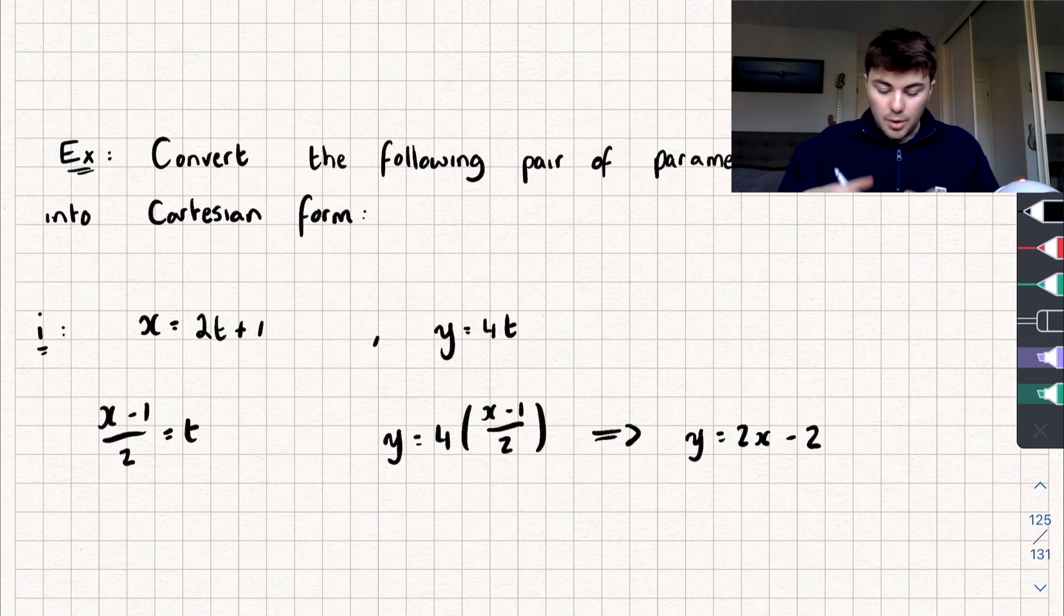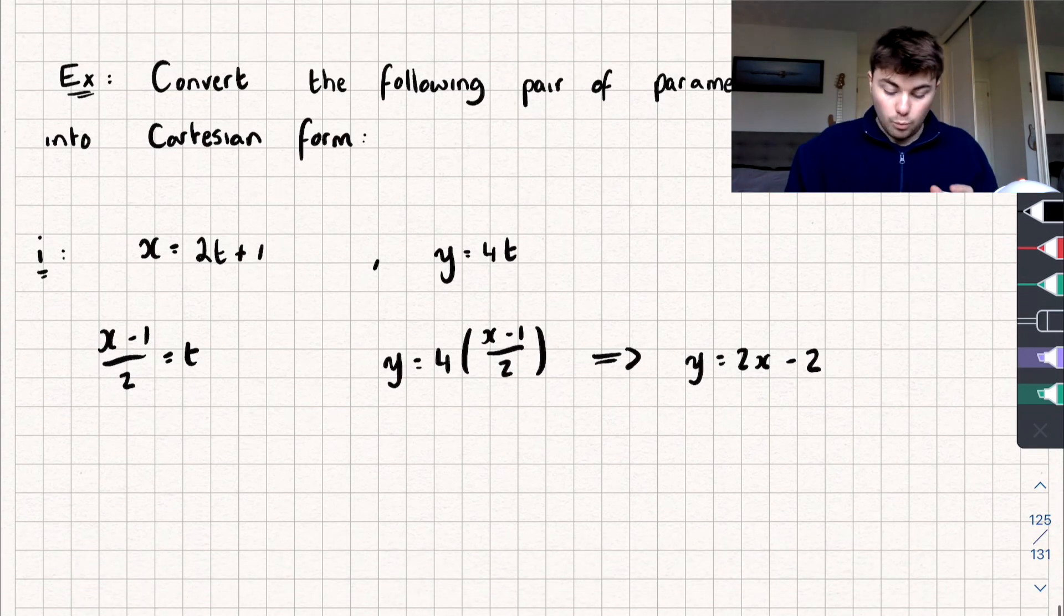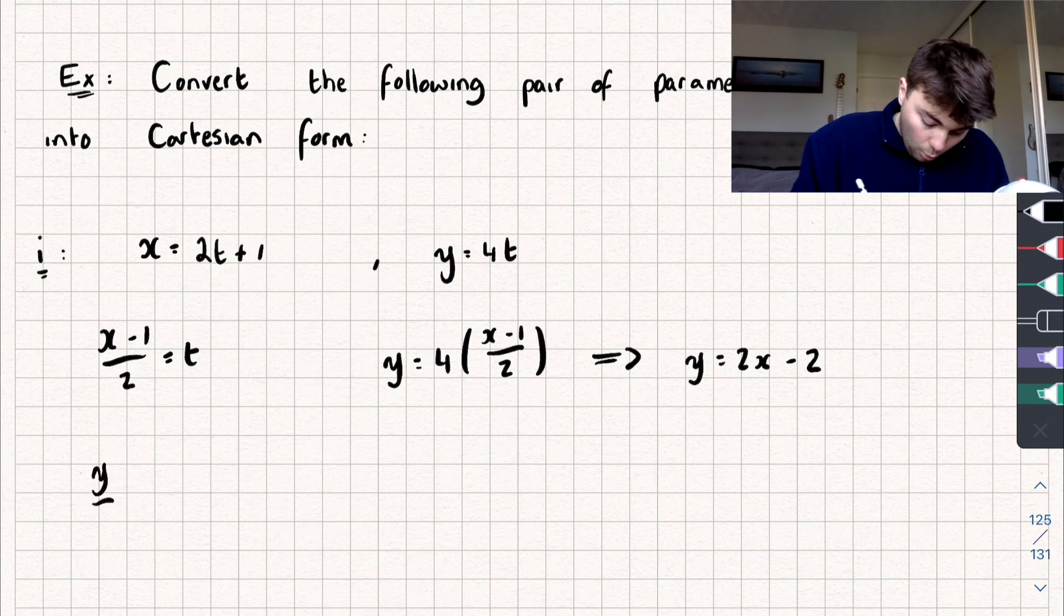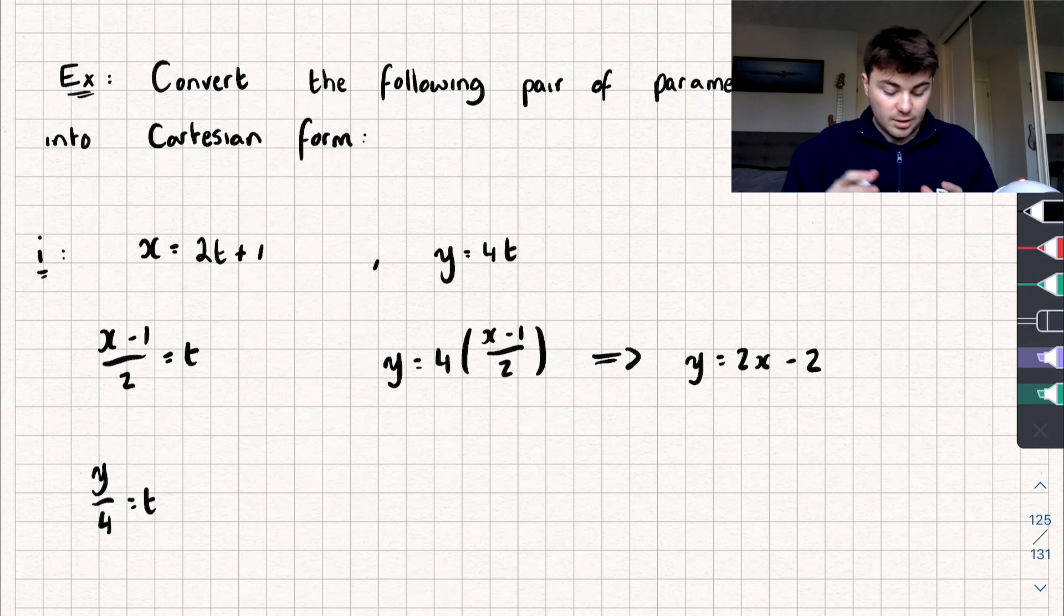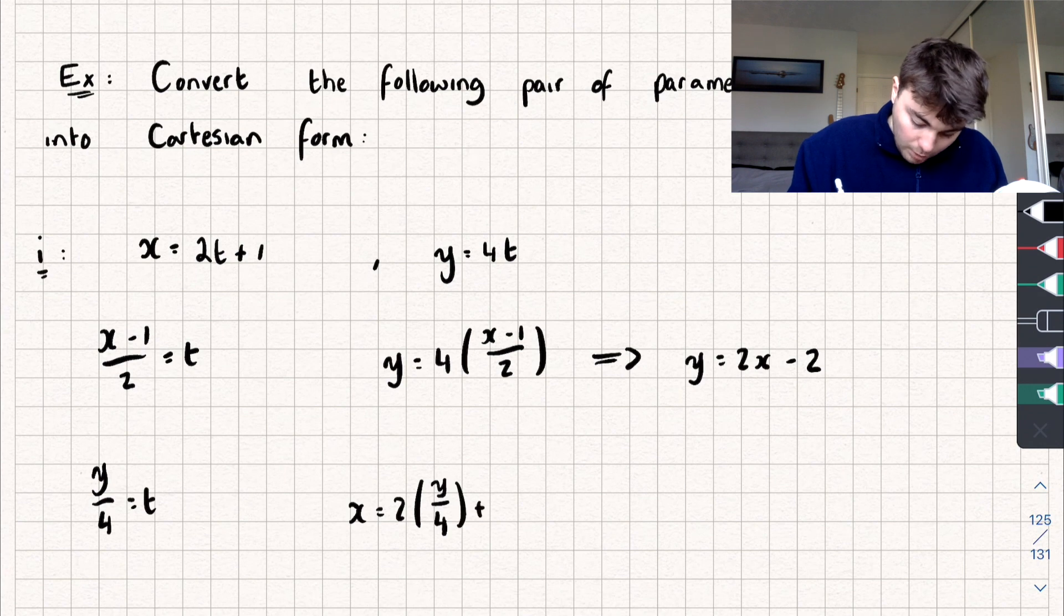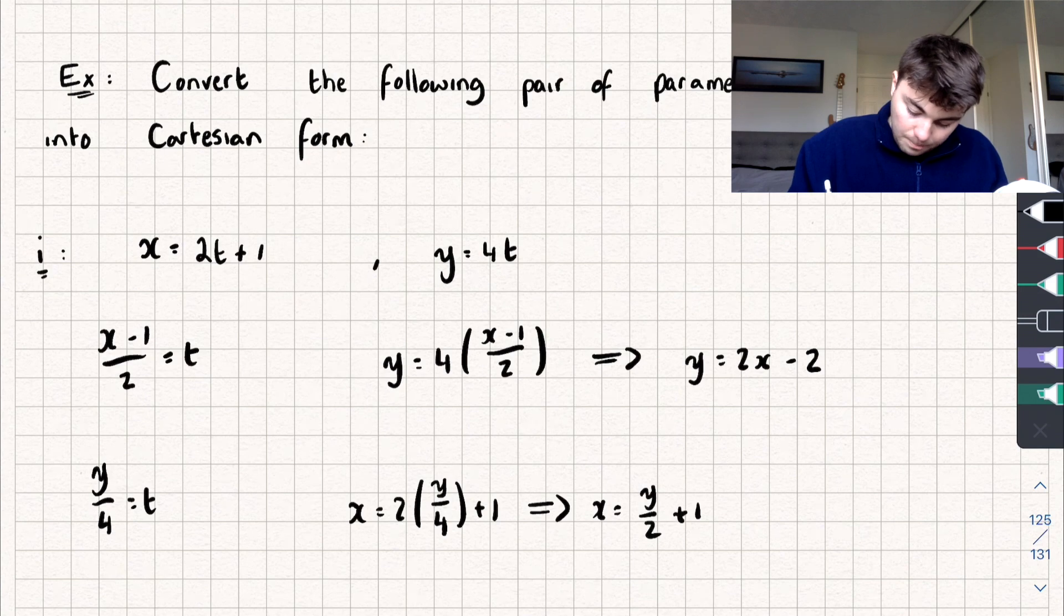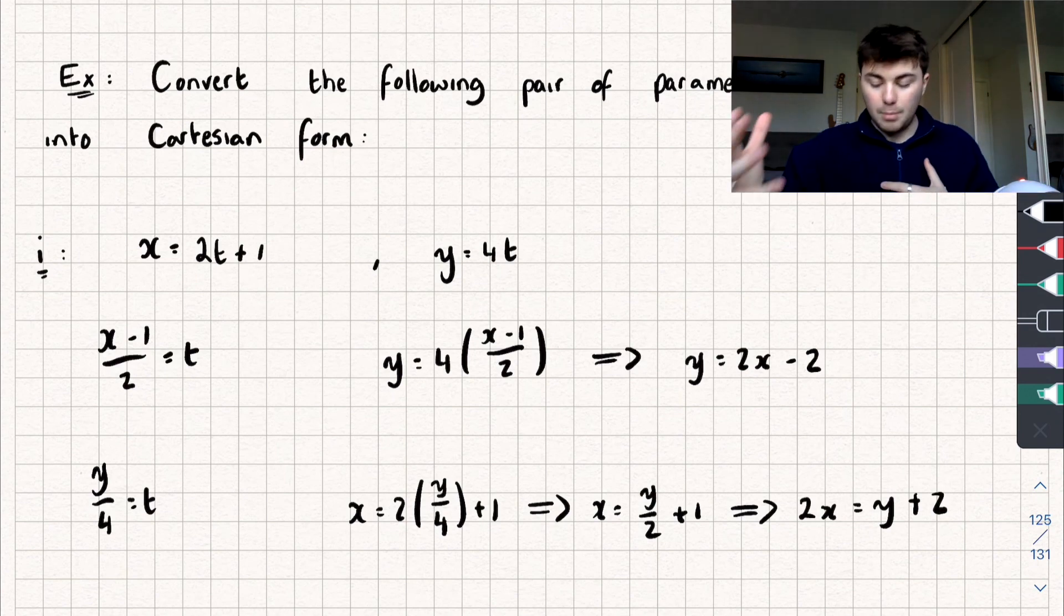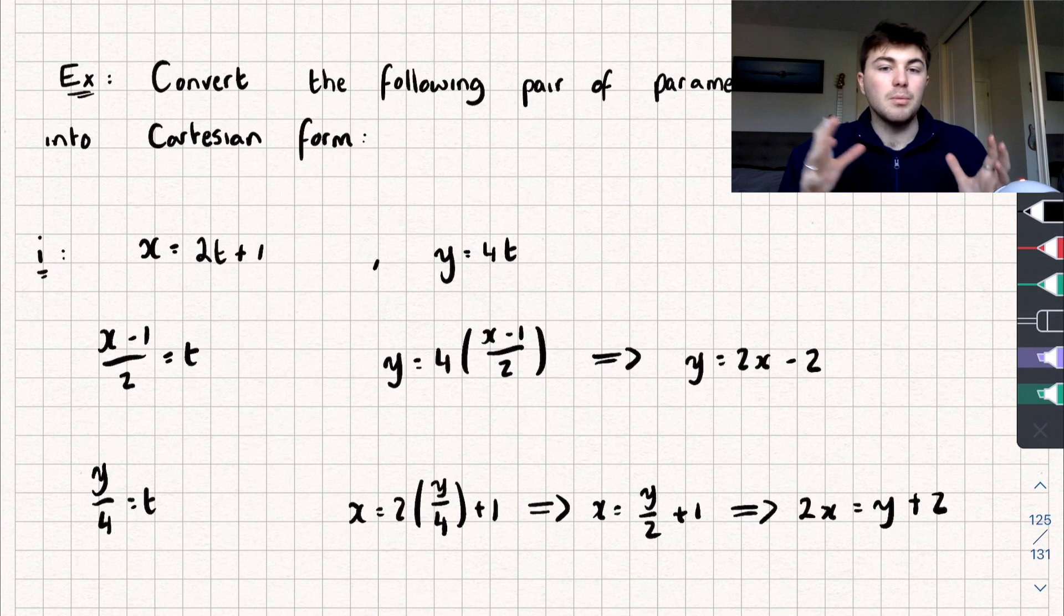Now, we didn't have to work through it that way. We could have first rearranged our equation of y. So if we do that, we would get y divided by 4 is equal to t. And substituting that into x equals 2t plus 1, we get that x is equal to 2 lots of y divided by 4 plus 1. Expanding, that's going to give us that x is equal to y divided by 2 plus 1. And multiplying through by 2, we get that 2x is equal to y plus 2, which is the same as the equation above, just in a slightly different form. So that's the first case, which is probably the most simple.